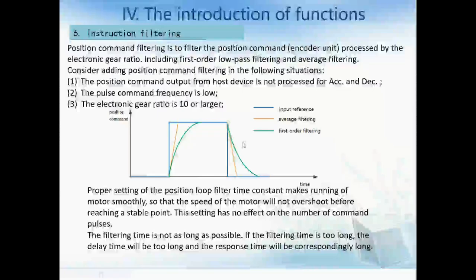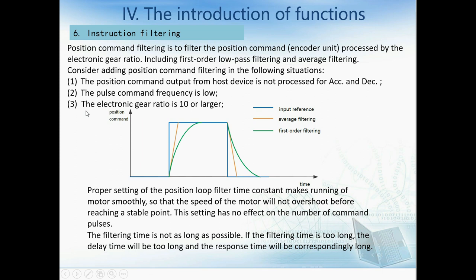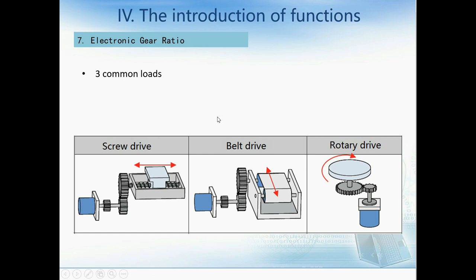Now we talk about filtering. Command filtering is used to filter the command processed by the electronic gear ratio, including first-order low-pass filtering and average filtering. Consider adding command filtering in three situations: when the command output is not processed for acceleration or deceleration, when the pulse command frequency is low, or when the electronic gear ratio is 10 or larger. The first-order filtering has the smoothest curve, resulting in the least vibration. Note: if the filtering time is too long, the delay time will be too long and response time will be extended. For the three common loads, we need to set different gear ratios according to the application.